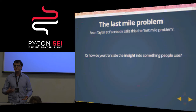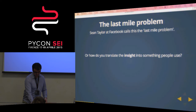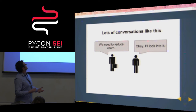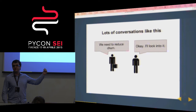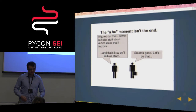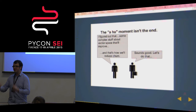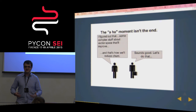The last mile problem is the fundamental challenge we all have — how do you translate the insight that an expert gets into something people can use? You get conversations like: 'We need to reduce churn.' 'I'll look into it.' And then you have this moment — the language problem. You've internalized these things, and the ha-ha moment at the end is 'complex vector spaces — sounds good, let's do this.' This is what it looked like the first time I worked with a software team.